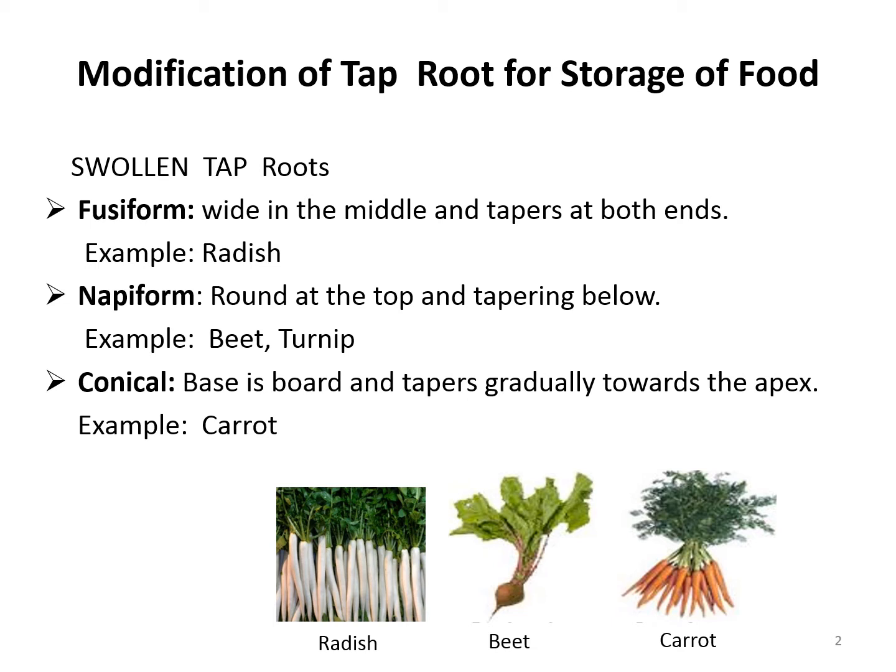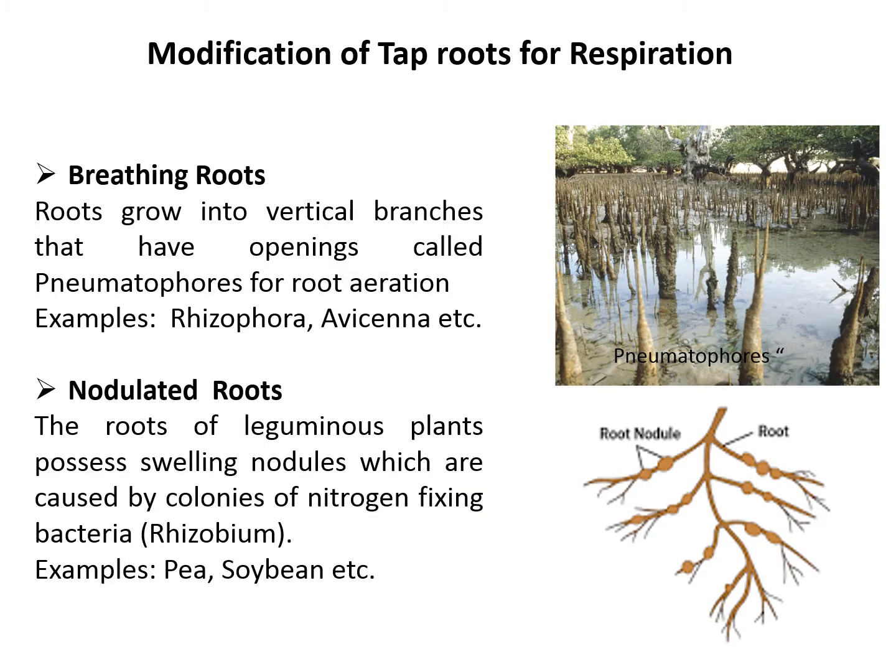Another form is the conical form, which is broad and tapers gradually towards the apex. An example is carrot.